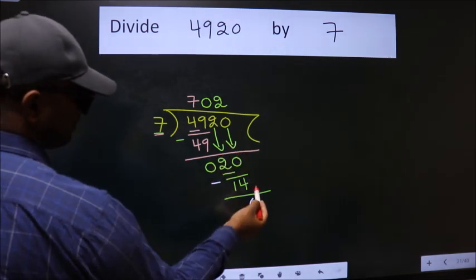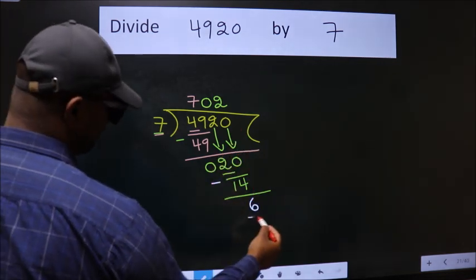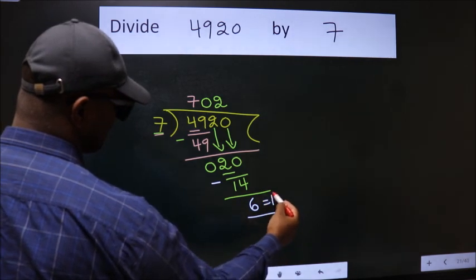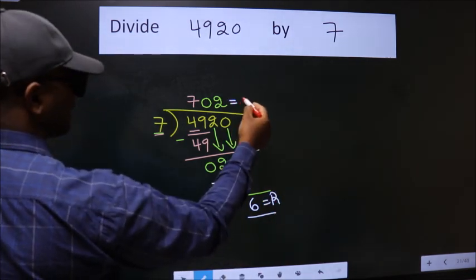No more numbers to bring it down. So, we stop here. This is our remainder. This is our quotient.